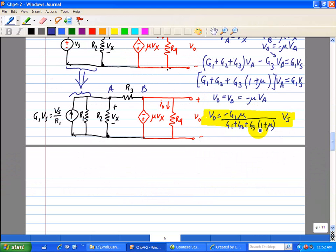Now let's take a look at this expression when mu is very large. When mu is very large here in the denominator, G3 times 1 plus mu is large when compared to R1 plus R2. So, let's do that.